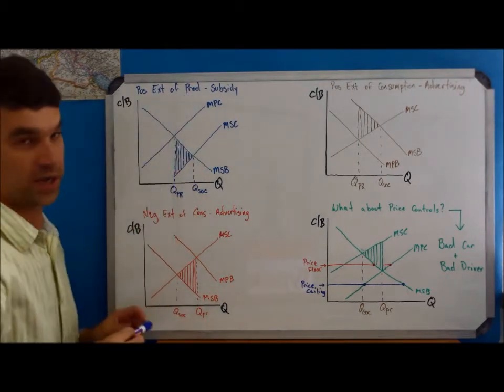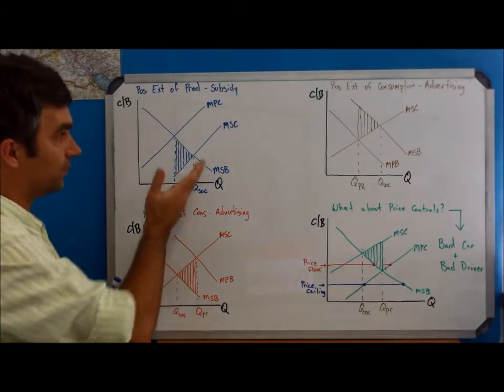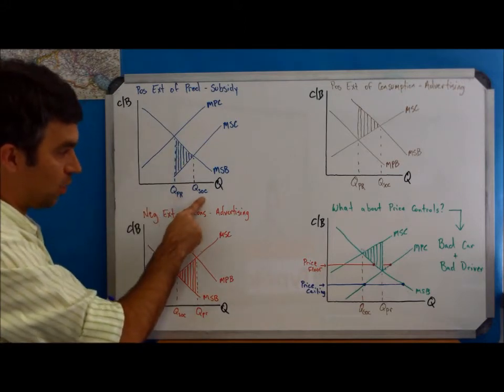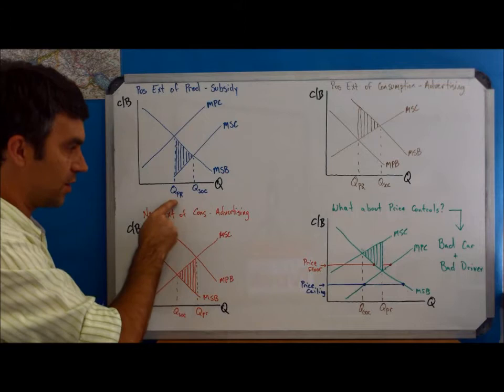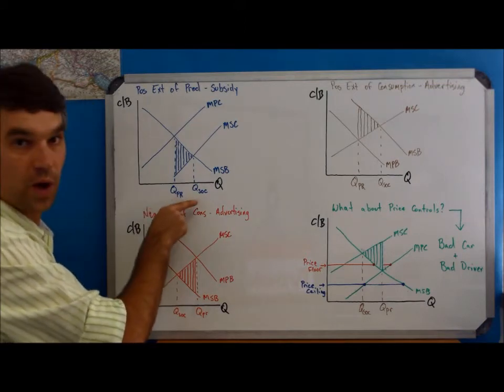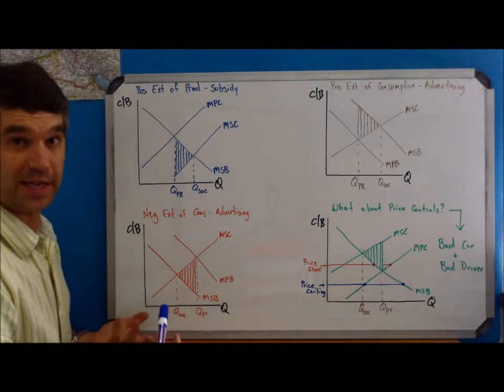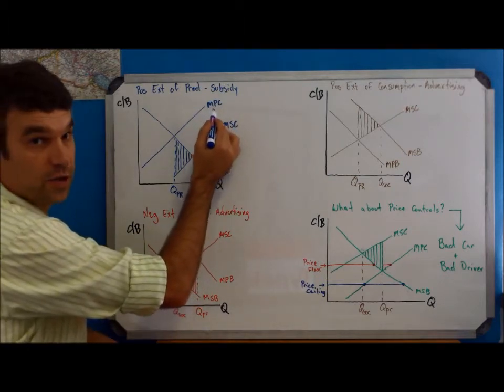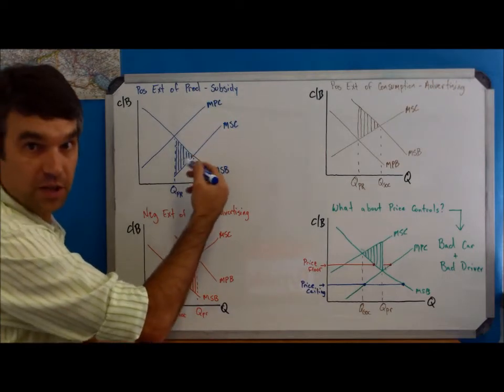With a positive externality of production, now we're saying that the socially optimal quantity is greater than the quantity the private market is producing, so we want to move this to the right. Again, we can easily see that if we subsidize the production of this good, whatever it is, we usually use training for this or education.